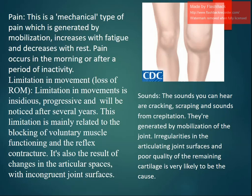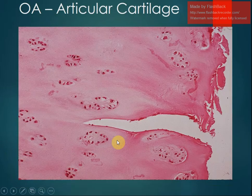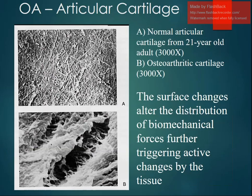There will be changes in the articular cartilage resulting in tissue swelling, fibrillation, and cartilage erosion down to the subchondral bone. Comparing images, the normal articular cartilage from a 21-year-old adult contrasts clearly with osteoarthritic cartilage, which shows surface changes after disruption of biomechanical forces, triggering active changes by the tissue.